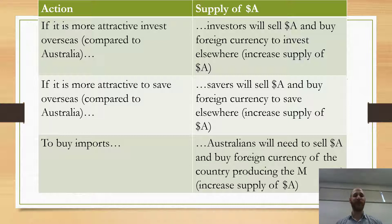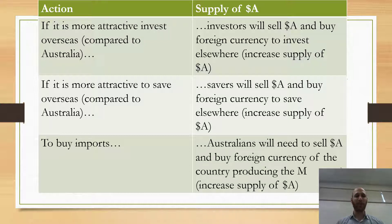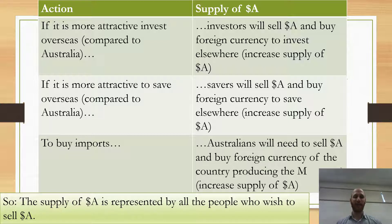If it is more attractive to save overseas compared to Australia — for example, if there are high interest rates overseas — then savers will sell their Australian dollar and buy foreign currency to save elsewhere, which will increase the supply of Australian dollars. The supply of Australian dollars is represented by all the people who wish to sell Australian dollars.